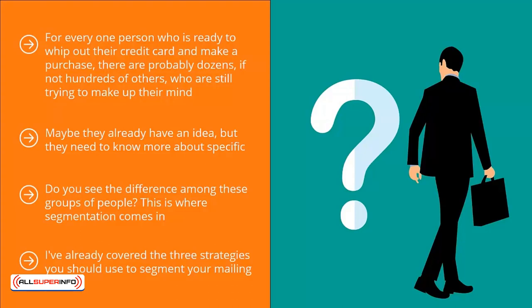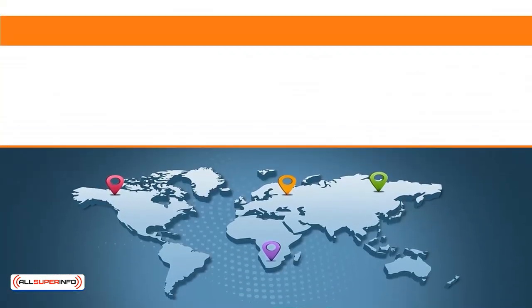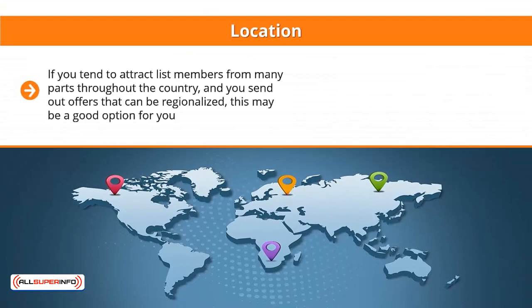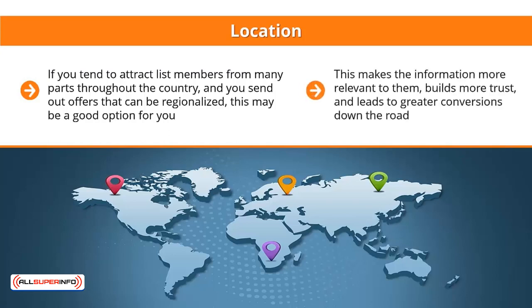You can segment your list members' emails using the following criteria. Location: if you attract list members from many parts of the country and you send out offers that can be regionalized, this may be a good option. Send only updates related to a specific region to people who live there. This makes the information more relevant to them, builds more trust, and leads to greater conversions down the road.